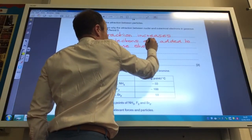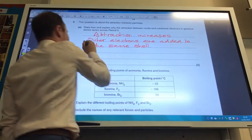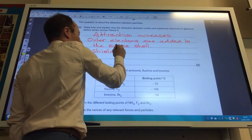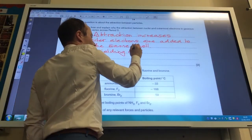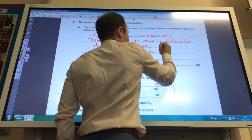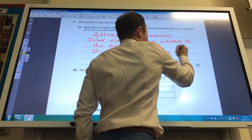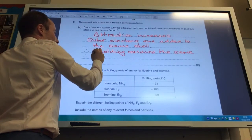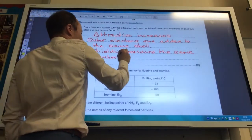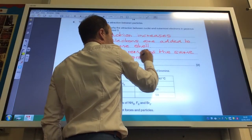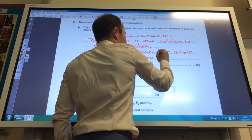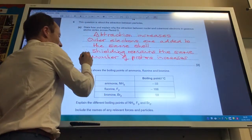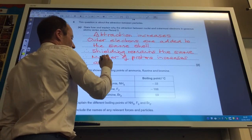So therefore shielding remains the same. However, number of protons in the nucleus increases. So number of protons increases as you go across the period. Therefore attraction will increase. There you go.